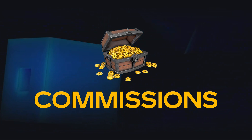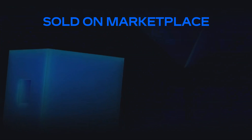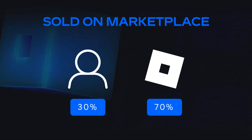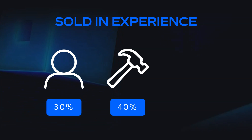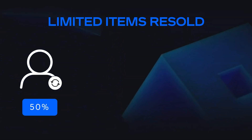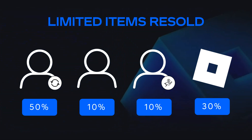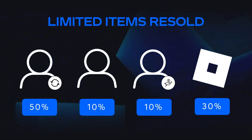Now let's talk about commissions — how much money you'll make off each avatar item you upload. When community items are sold on Roblox, a portion of sales is split between the original item creator and Roblox. If sold on the Marketplace, the creator receives 30% while Roblox gets 70%. If sold within an experience, the creator receives 30%, the experience owner receives 40%, and Roblox keeps 30%. If a limited item is being resold, 50% goes to the reseller, 10% to the original creator, 10% to the seller/affiliate, and 30% to Roblox. A single party can receive one or more commissions for a single transaction, such as when the original creator is also the reseller.